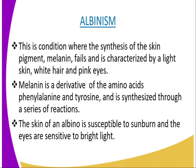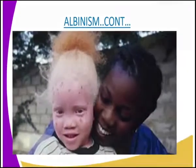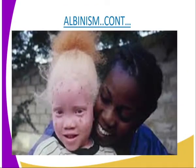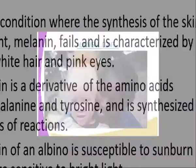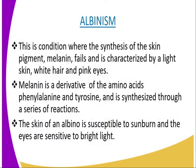Albinism is a condition where the synthesis of the skin pigment melanin fails, and is characterized by light skin, white hair, and pink eyes. Such an individual is described as an albino. Melanin is a derivative of the amino acids phenylalanine and tyrosine, and is synthesized through a series of controlled reactions.